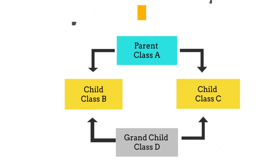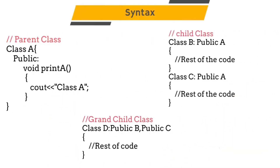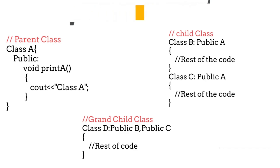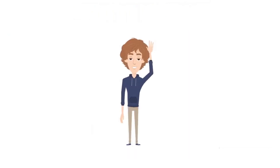In the hybrid inheritance diagram you can clearly see it is a combination of multi-level and hierarchical inheritance. Class A has two child classes, so it's hierarchical, and class D has two parents B and C, so class D can access the properties of all parent classes A, B, and C. That's it for today's video. I hope you understood the concept of inheritance — if you like this video please subscribe to my channel.